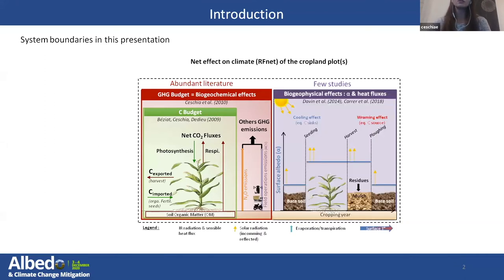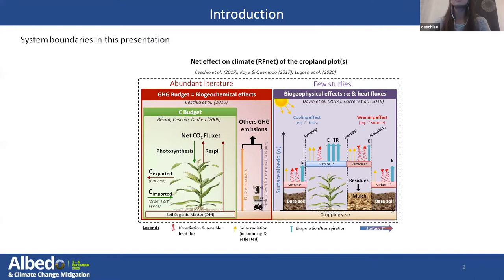Land management causes a variation in surface albedo. For example, when the albedo increases, it's equivalent to a carbon sink, like after seeding. And at the opposite, when the albedo decreases, it's equivalent to a carbon source. That has consequences on the repartition of energy between the different fluxes. We will study later the consequences on the latent and the sensible heat flux, but also on the longwave radiation.